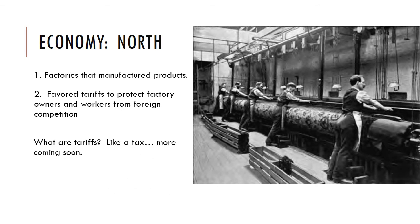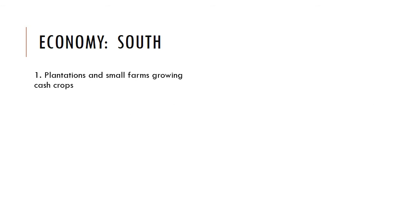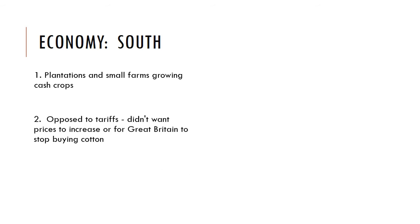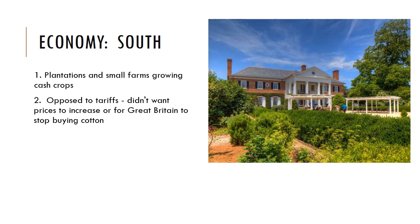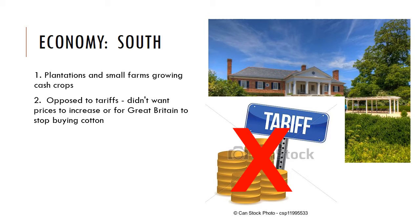The North also favored tariffs — think of them like taxes — used to protect factory owners and workers from foreign competition. In the South, the economy centered on plantations and small farms growing cash crops like cotton, tobacco, and in the Carolinas, rice and indigo. The South did not like tariffs. They did not want prices to increase because they were afraid that countries like Great Britain — a big buyer of Southern cotton — would stop buying cotton as a boycott, as a protest.